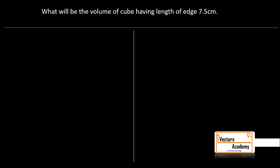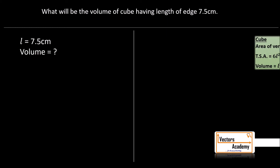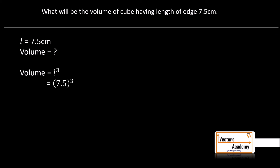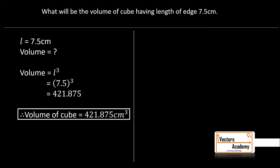What will be the volume of a cube having the length of the edge 7.5 centimeters? This is a fairly simple example. The length is given and the formula for the volume of a cube is L³. So the answer will be 7.5³ = 421.875 cm³. Such questions can come up to 2 marks.